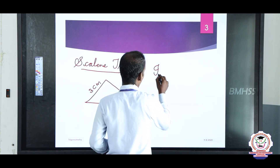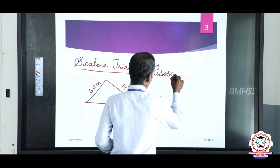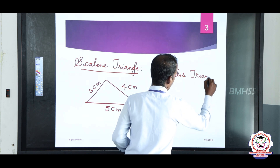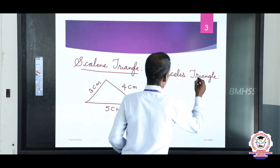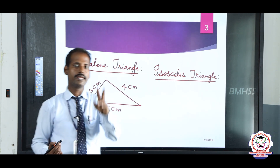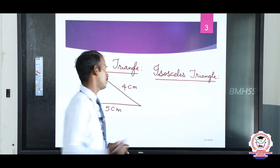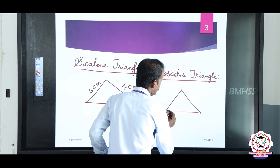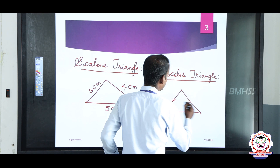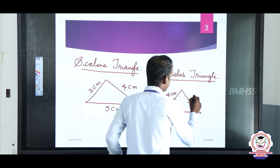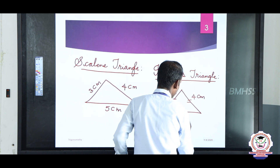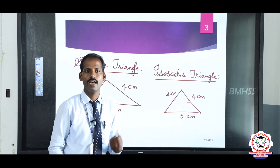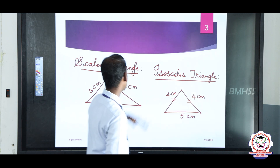And then next: isosceles triangle. What is an isosceles triangle? Any two sides are equal. For example, this side is 4 centimeters and this side is also 4 centimeters, while the third side is 5 centimeters. This is an isosceles triangle — any two sides are equal. That is the concept.